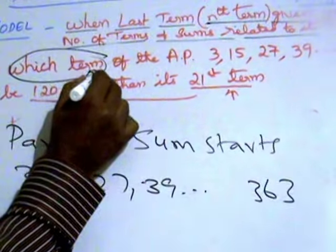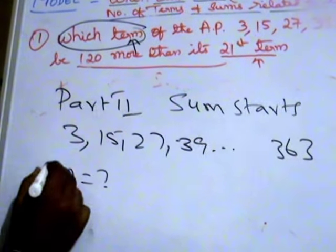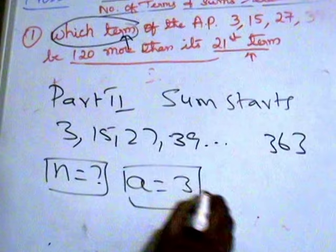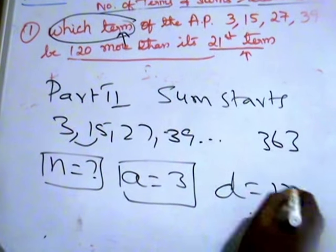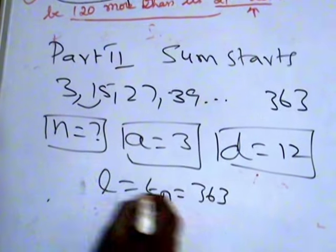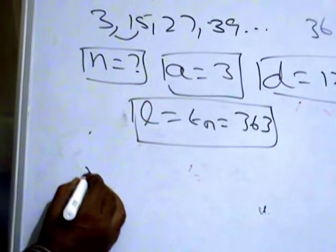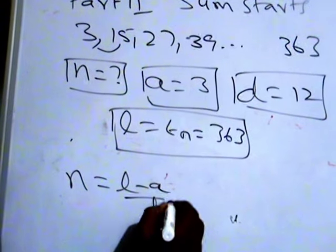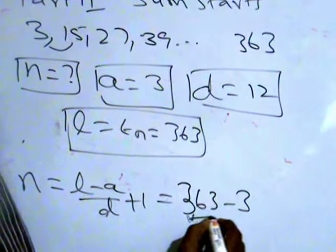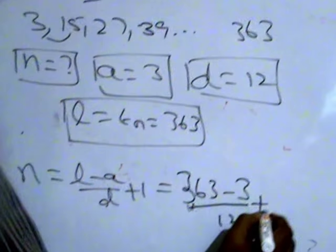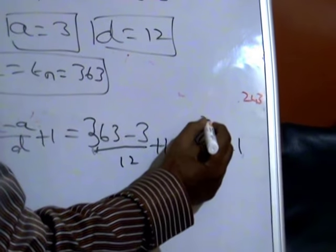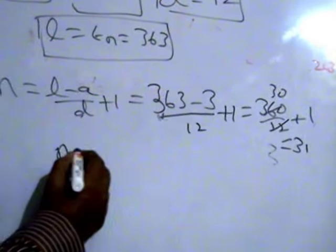The word 'term' means N, so N is equal to question mark. A is equal to 3, and D is 12 as found in Part 1. TN equals 363. We use the formula N = (L − A)/D + 1. L is 363, A is 3, D is 12. We get (363 − 3)/12 + 1 = 360/12 + 1 = 30 + 1 = 31.